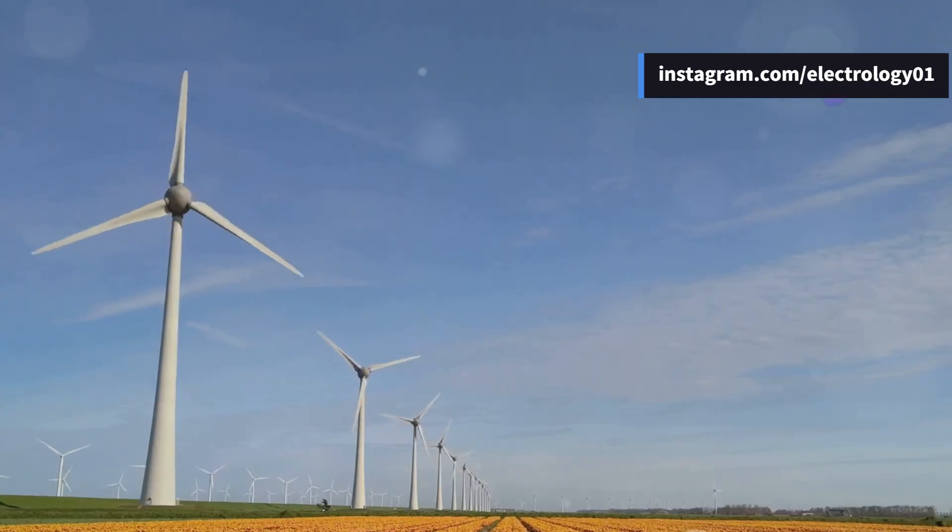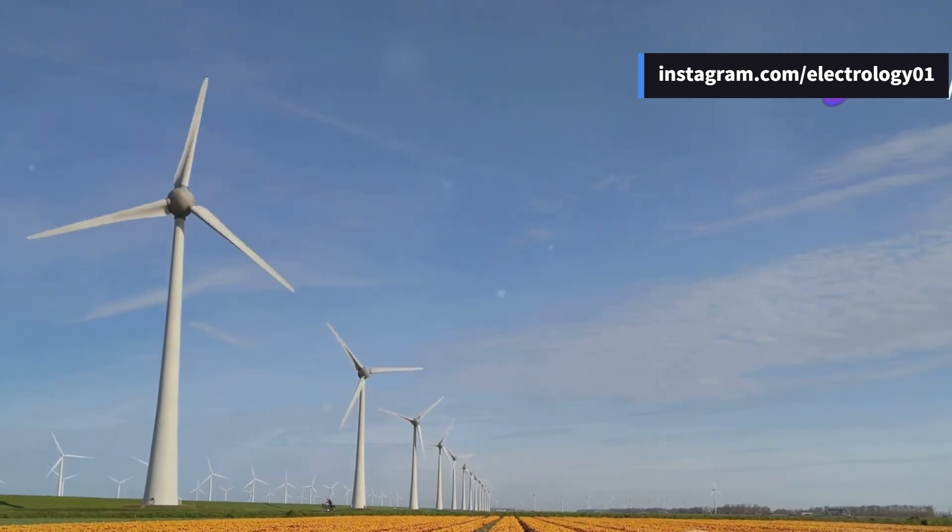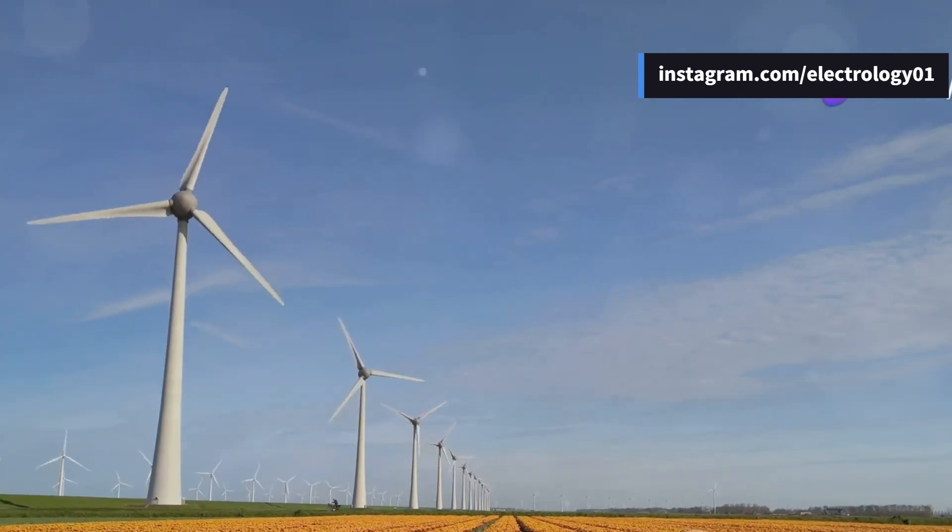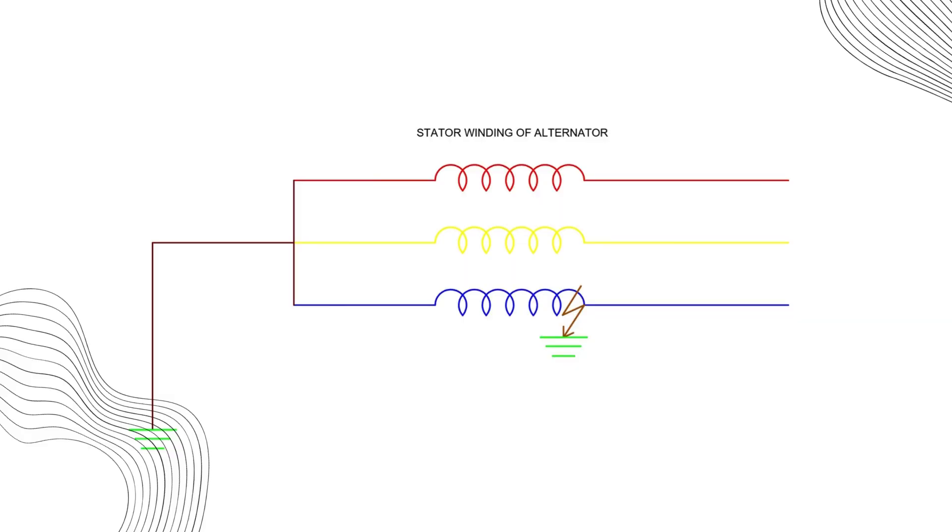A generator's stator is the heart of its operation, converting mechanical energy into electrical energy. But what happens if there's a fault in the insulation between the stator winding and the ground? That's where earth fault protection comes in.